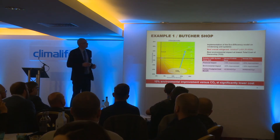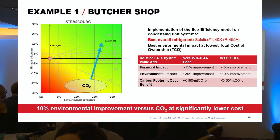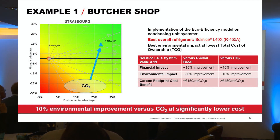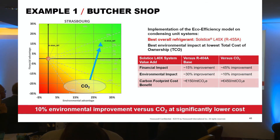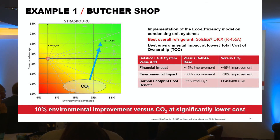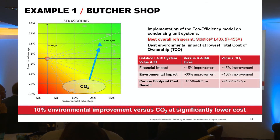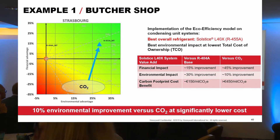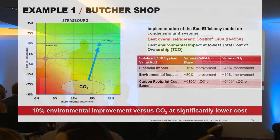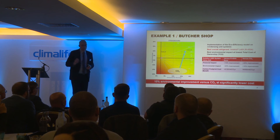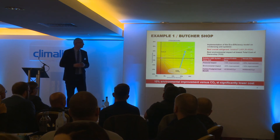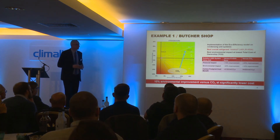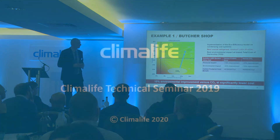The dotted lines you see on the graph represent the cost of one ton of CO2 removal. Looking at those lines and seeing where the specific architecture is positioned, you can assess how much it will cost to meet your environmental goals in terms of CO2 removal.